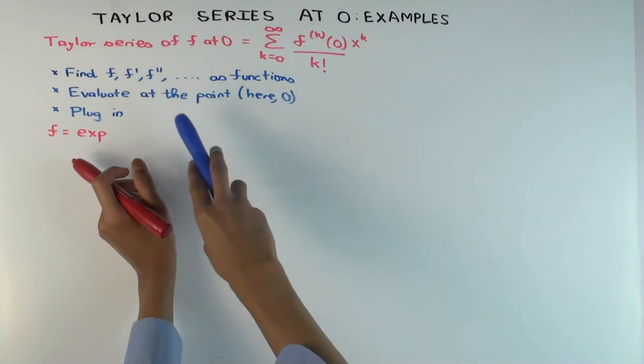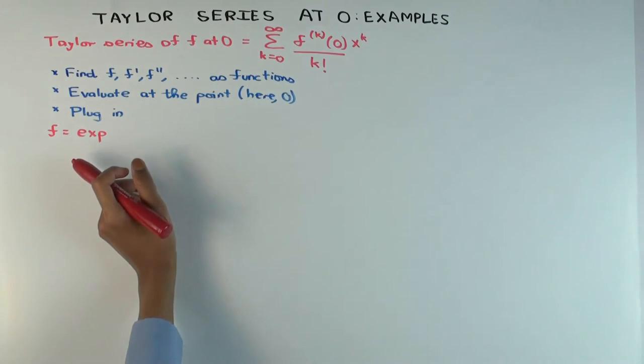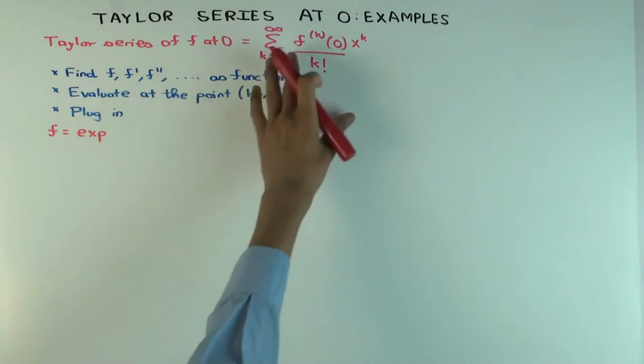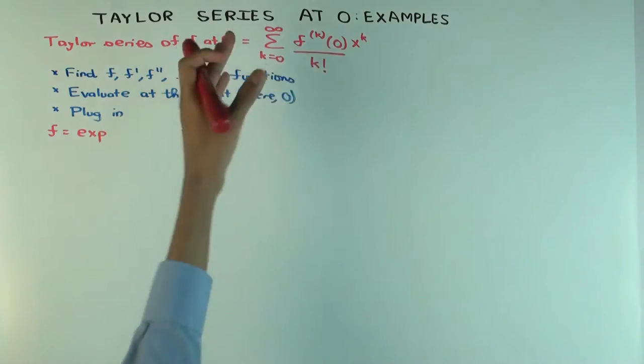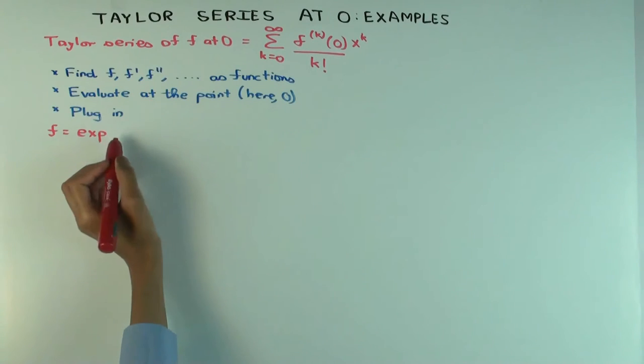So evaluate all the derivatives at zero. And then once you've evaluated all of them, you plug those into this formula and get the Taylor series.